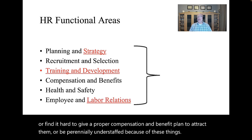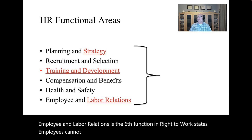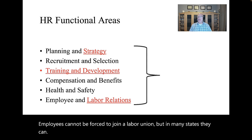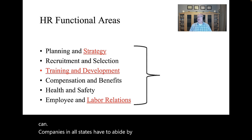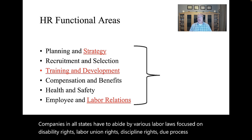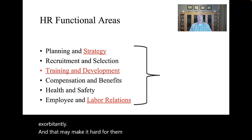Employee and labor relations is the sixth function. In right-to-work states, employees cannot be forced to join a labor union, but in many states they can. Companies in all states have to abide by various labor laws focused on disability rights, labor union rights, discipline rights, due process rights, etc. A company that runs afoul of labor laws can be fined exorbitantly, and that may make it hard for them to convince people to stay or apply there.